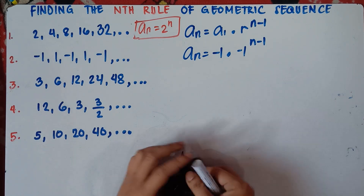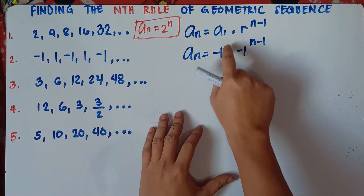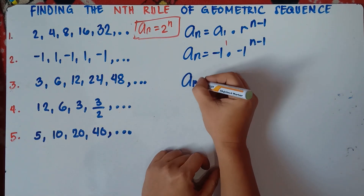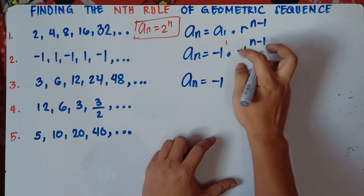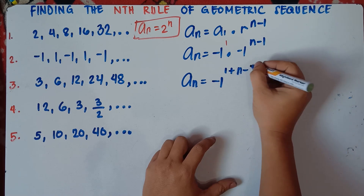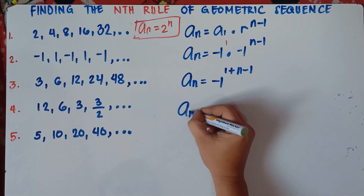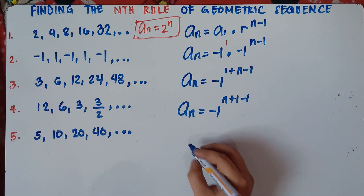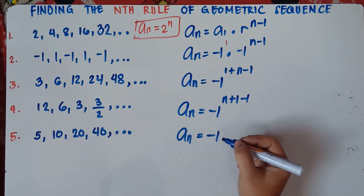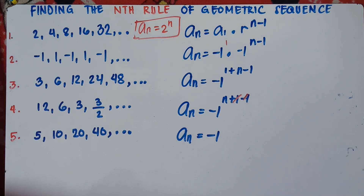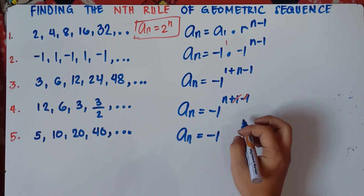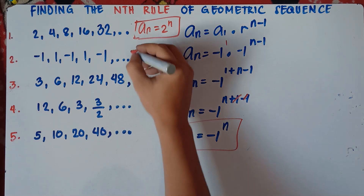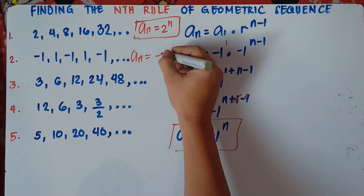If they have the same base, simply copy the base, then add the exponents. Understood that there's an exponent of 1 here. So this will be a sub n equals — copy the base, negative 1 — then add the exponents: 1 plus n minus 1. You can arrange this: n, positive 1, negative 1. Cancel these out because 1 minus 1 is 0. So this will be a sub n equals negative 1 raised to the power of n. And that would be your answer class.